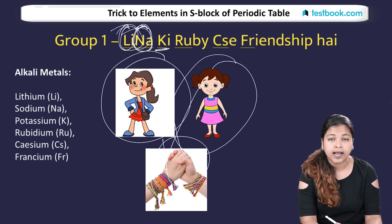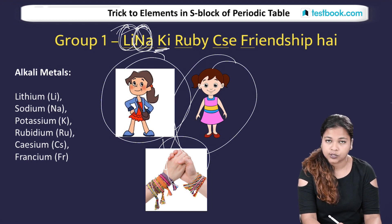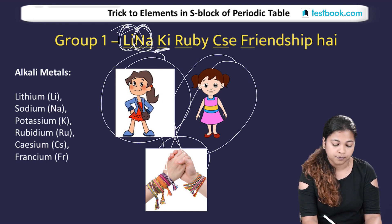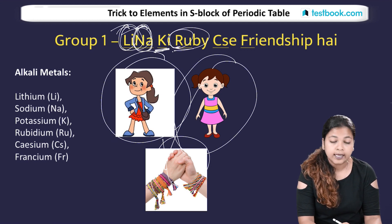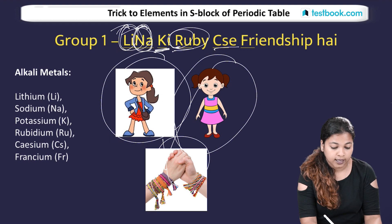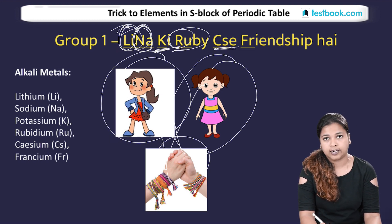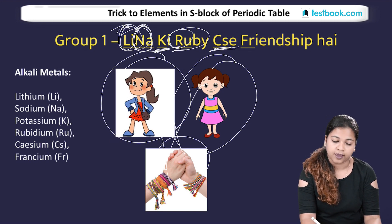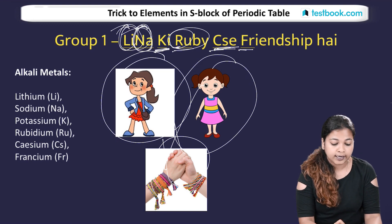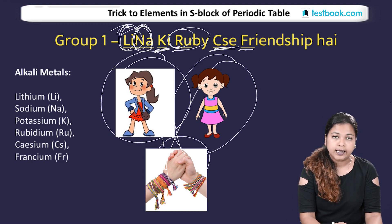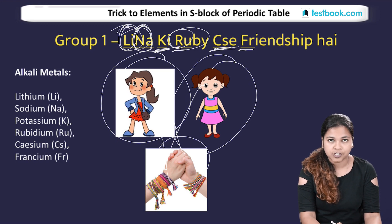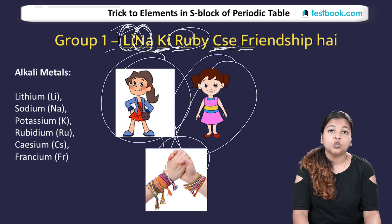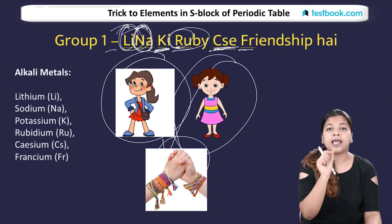So: Lina — Li — Lithium; Na — Sodium; K — Potassium; Ruby — Rubidium; Cs — Caesium; and Friendship — Fr — Francium. So these are the Group 1 S block elements: Lithium, Sodium, Potassium, Rubidium, Caesium, Francium.